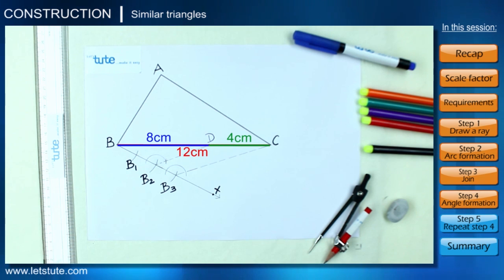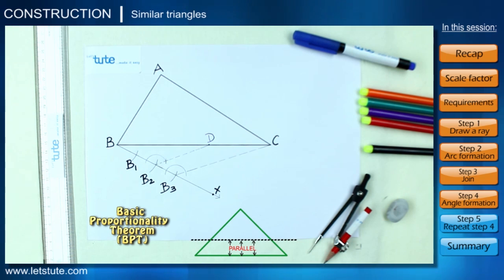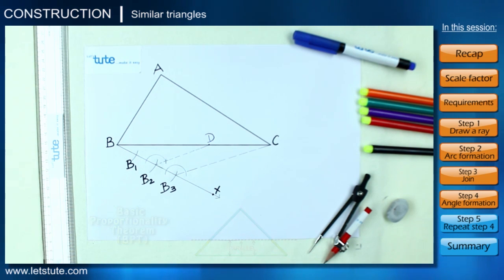Or the second way to prove this is if you recollect the well-known basic proportionality theorem, or BPT, which says if we pass a line through a triangle in such a way that it is parallel to one side of the triangle, then the other two sides will be divided in the same proportions. And if you notice, that is exactly what is happening here.